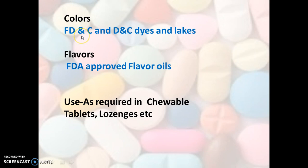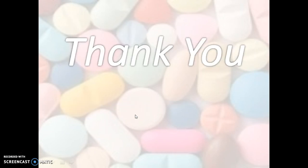FDA approved FD&C and D&C dyes and lakes are used for colors. For flavors, FDA approved flavors and oils are used. Colors and flavors are very much required when you want your tablet as a chewable tablet, lozenge, or buccal tablet. So that was all about excipients — I hope you have got a short glimpse about the various excipients. Thank you.